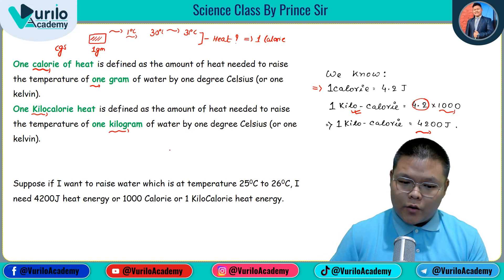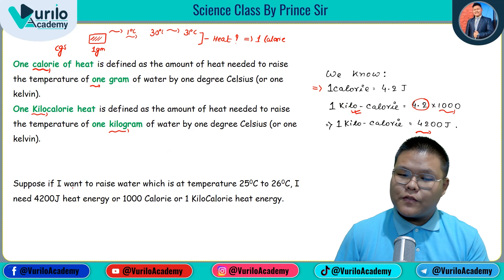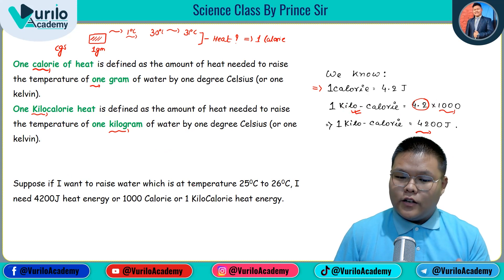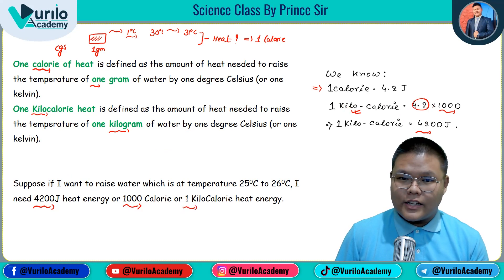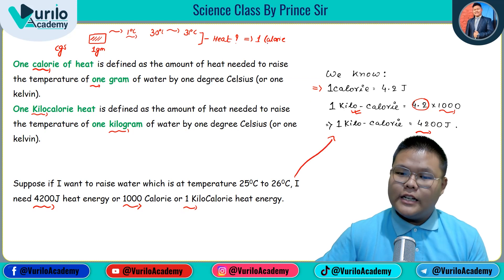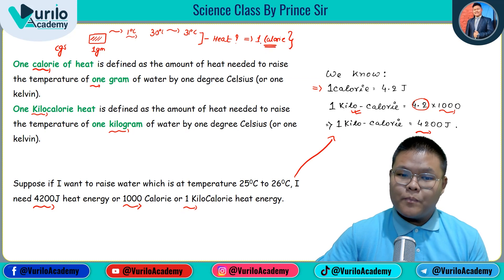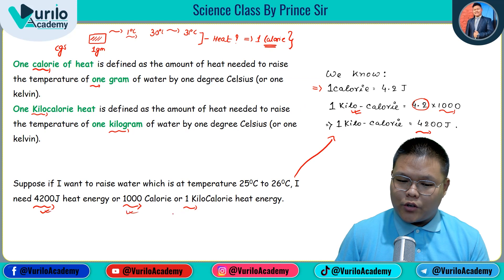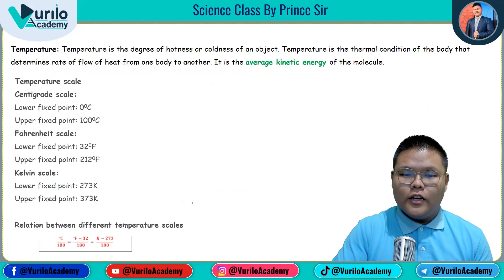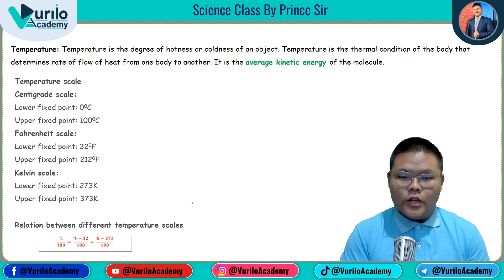For example, if I want to raise the temperature of water from 25 degree centigrade to 26 degree centigrade, I need 4200 Joules of heat energy, which is also equal to 1000 calories, or one kilocalorie of heat energy. This is because we are raising one gram of water by one degree centigrade — that is the one calorie condition.